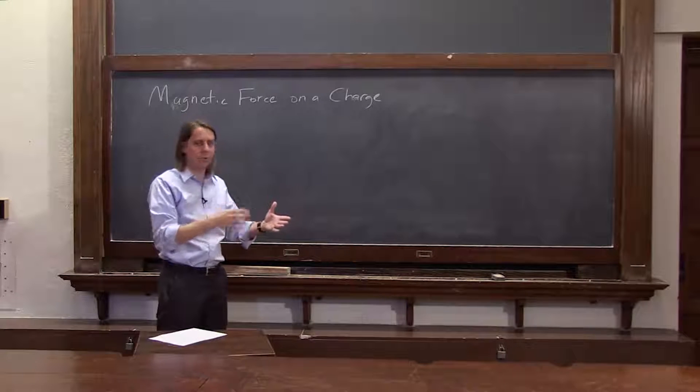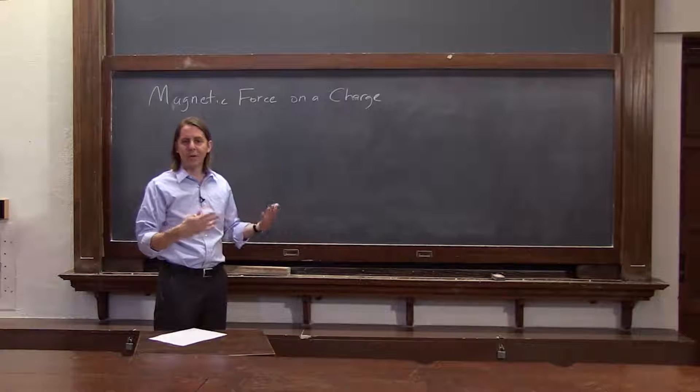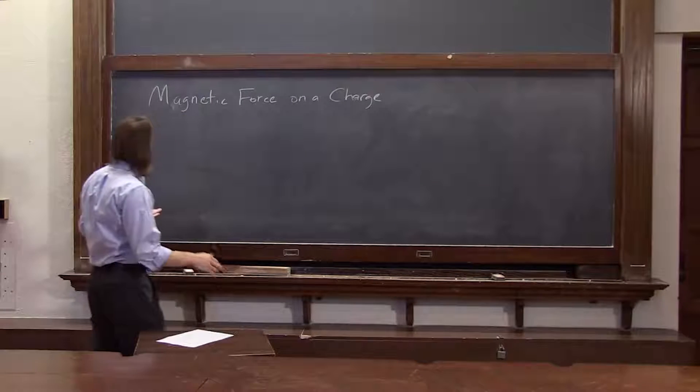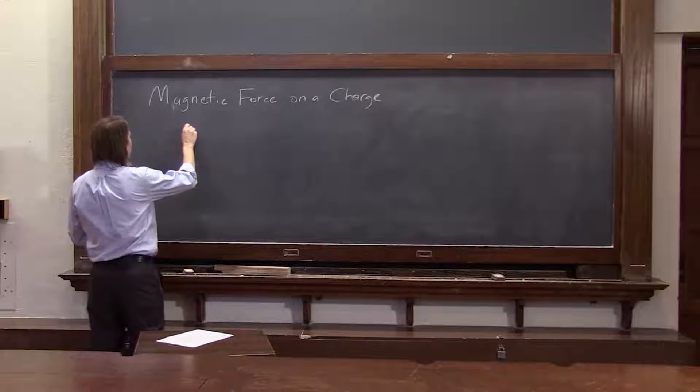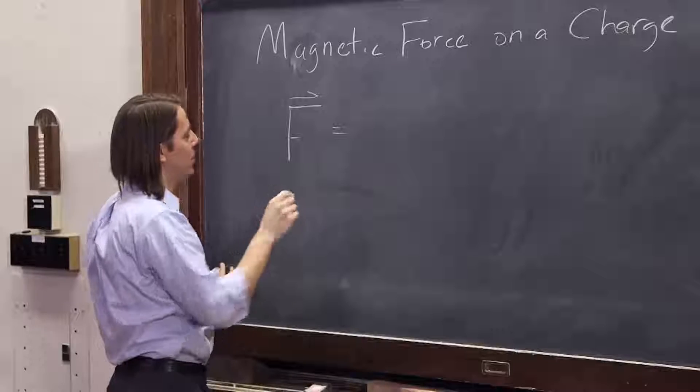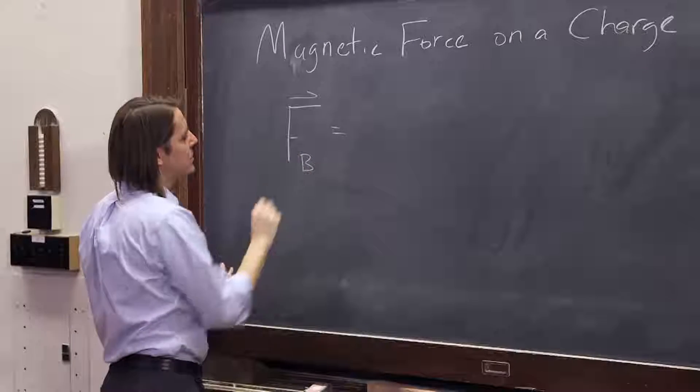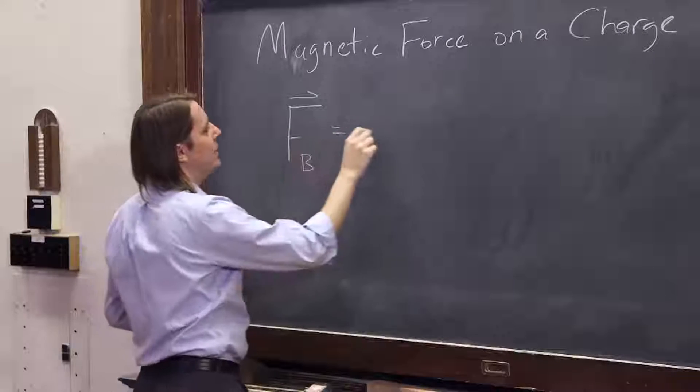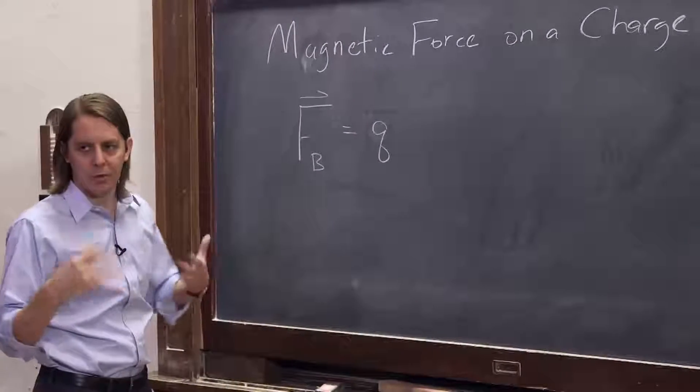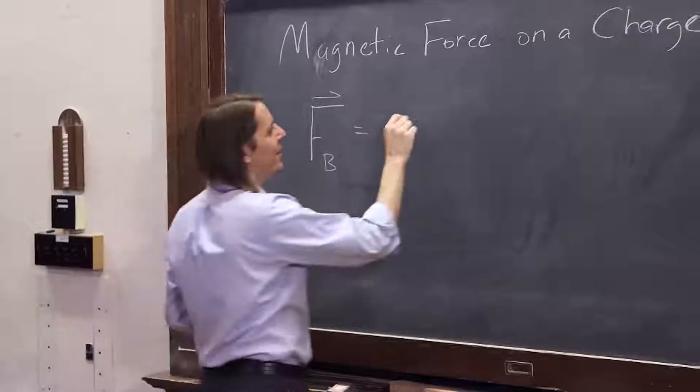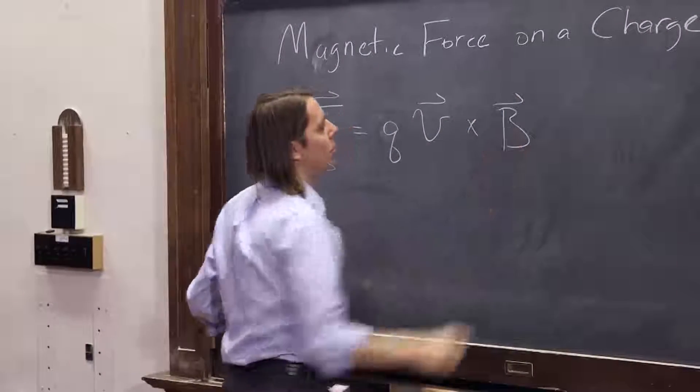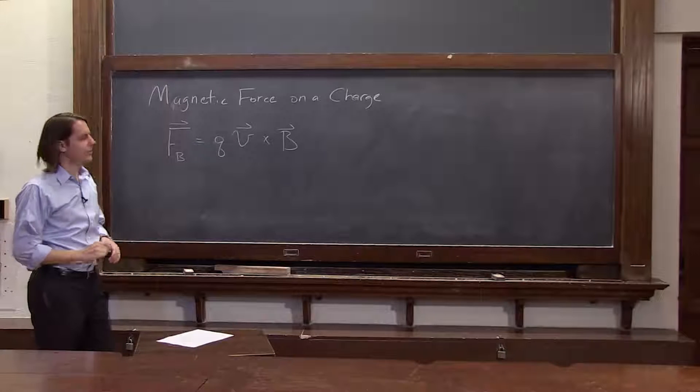Just like the electric field applies force to a charge, that's really all the magnetic field does. It applies force to a charge. Let's look at the equation then that describes that force. I showed you before the total force on a charge for E and B. But if we just look at the B part, then it's just Q, the charge, the charge on the charge, V, its velocity, cross B. That's the equation.